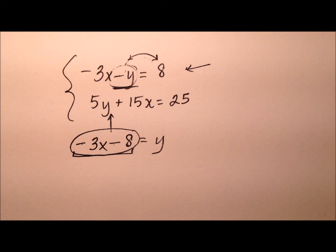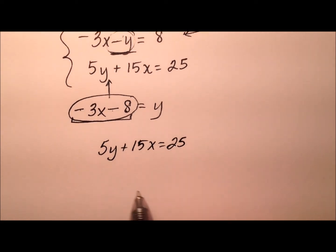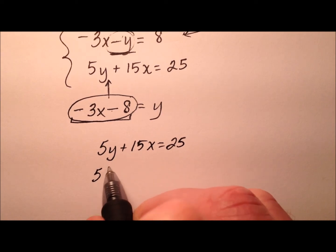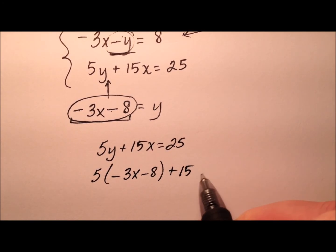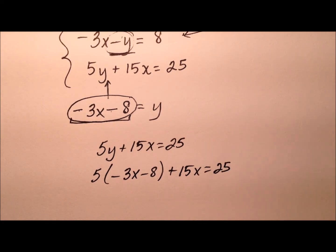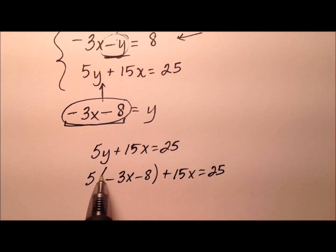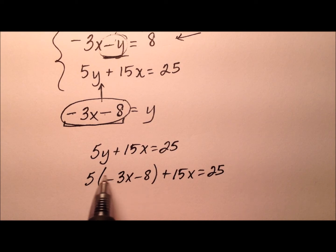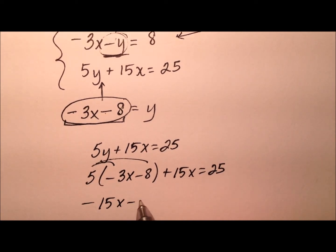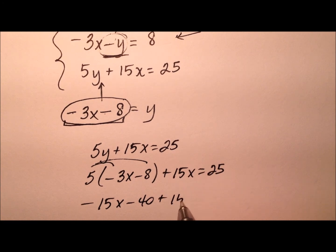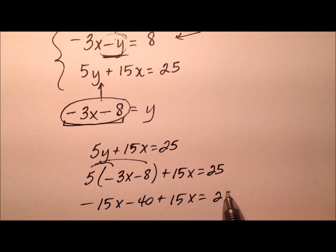And in that way, I'm going to combine these two equations. So 5y plus 15x equals 25. So when I plug in what I know is y, negative 3x minus 8, plus 15x equals 25. And again, when you substitute, make sure you're using parentheses. So we'll distribute here, negative 15x minus 40, plus 15x equals 25.